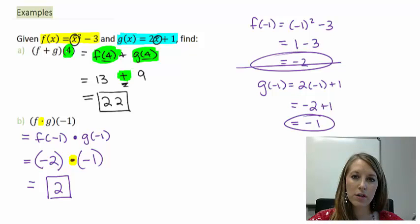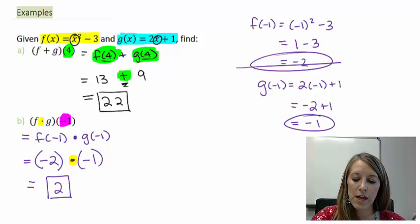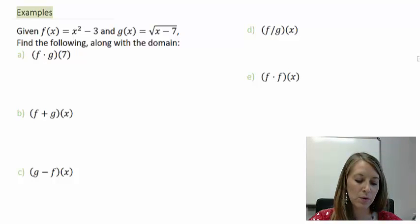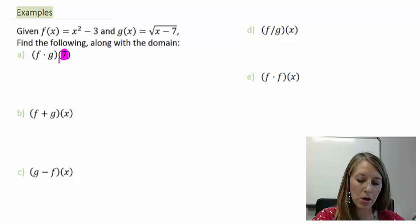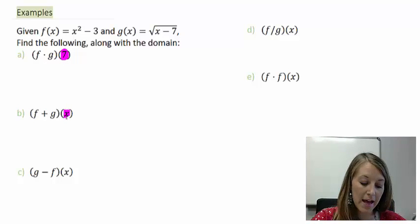We've learned how to evaluate these more specifically when substituting in numbers. Now let's see what it looks like when we don't substitute in numbers. I've defined two different functions: f(x) equals x squared minus 3, and g(x) equals the square root of x minus 7.